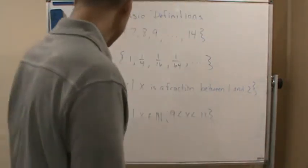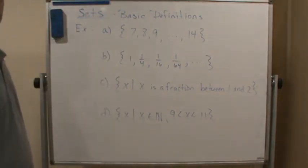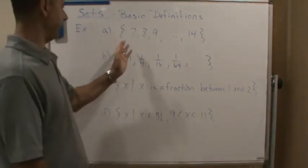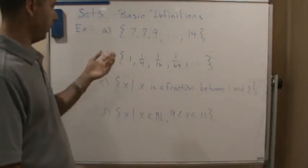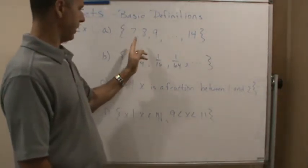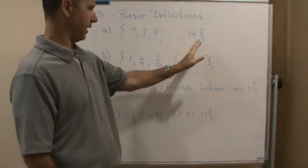So in this example here, we've got four parts. In part A, what do we have? We've got the set of numbers seven, eight, nine, then the ellipsis and the 14.